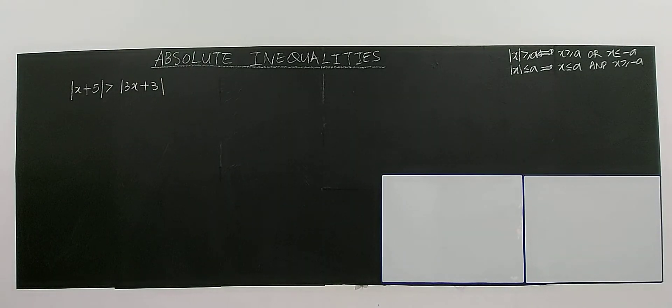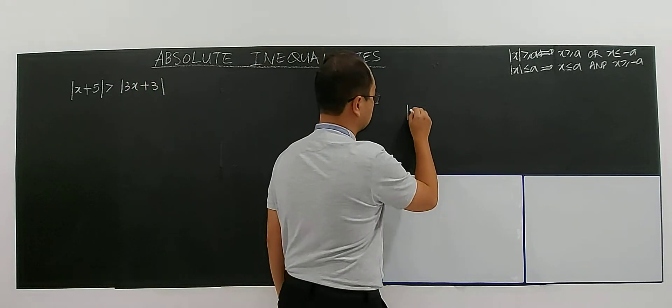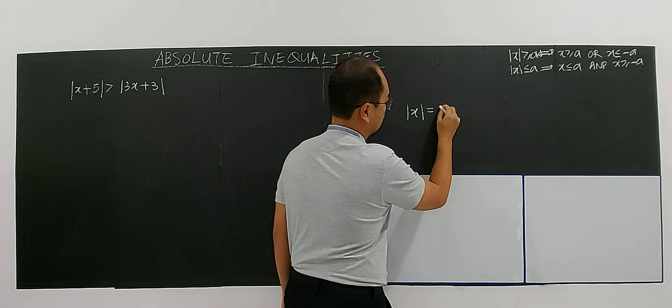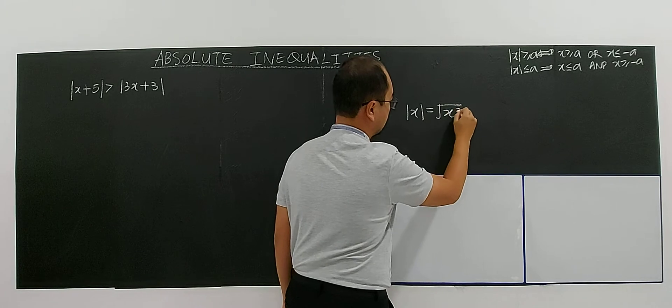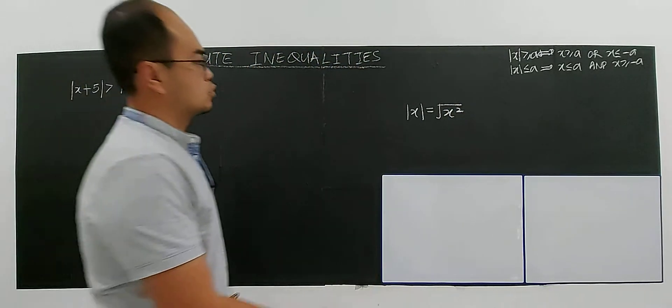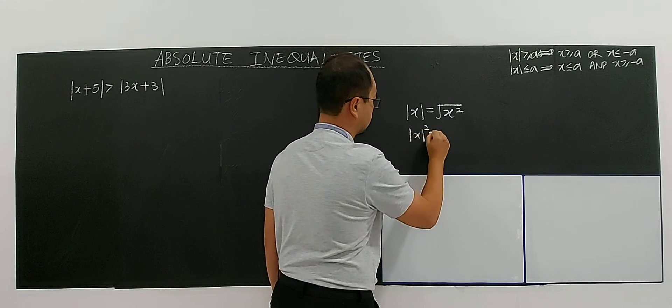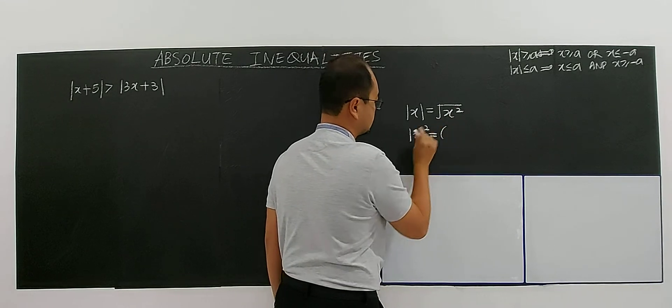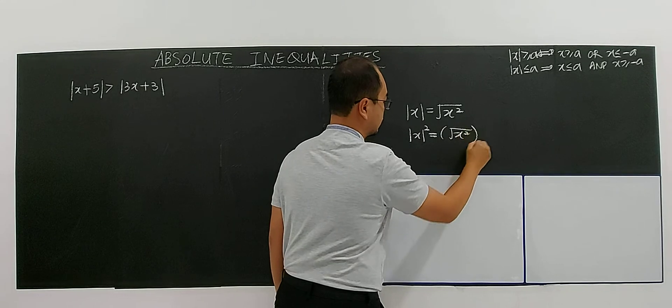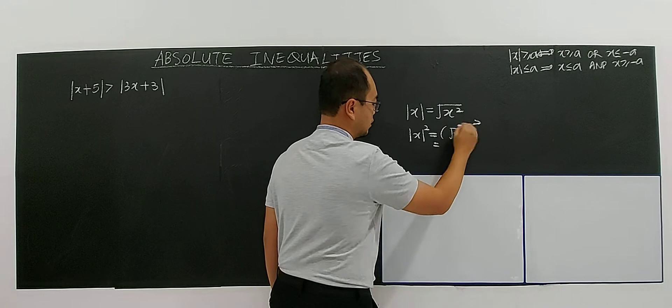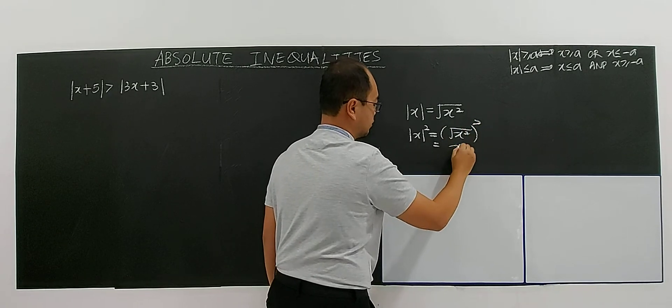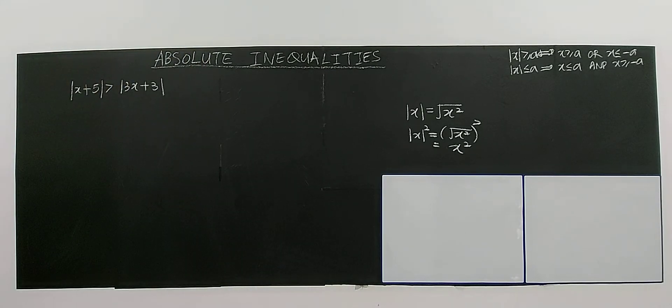For this case, I'm going to use the method of squaring both sides. So you have to understand this. Modulus of x is the same as the square root of x square. So if you square the modulus, this is actually the same as you square the square root of x square. You square, so the square root together with square eliminate, become x to the power of 2. So the same thing here.